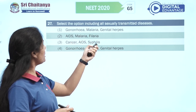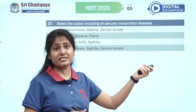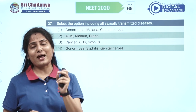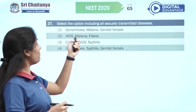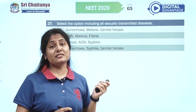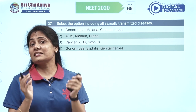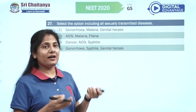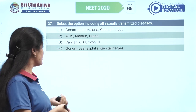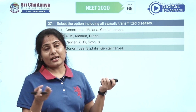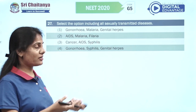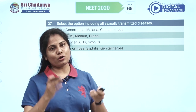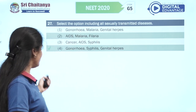Select the option including all sexually transmitted diseases. Option one: gonorrhea, malaria, genital herpes — malaria is transmitted through mosquito bite, so rule that out. Option two: AIDS, malaria, filaria — again malaria and filariasis. Option three: cancer, AIDS, syphilis — cancer is not STD. Option four: gonorrhea, syphilis, genital herpes — fourth option is the right option.